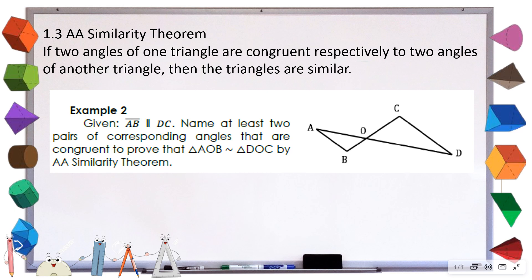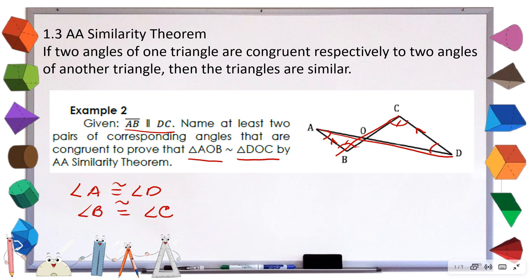Let's prove that triangle AOB is similar to triangle DOC, given that AB is parallel to DC. Since AB is parallel to DC cut by a transversal, our alternate interior angles are congruent — we can say angle A is congruent to angle D. Using another transversal, we have another pair of alternate interior angles, so angle B is congruent to angle C. We have proven two angles congruent, therefore triangle AOB is similar to triangle DOC by the AA similarity theorem.